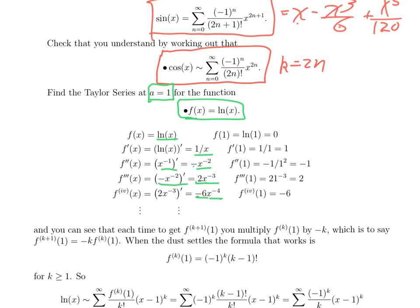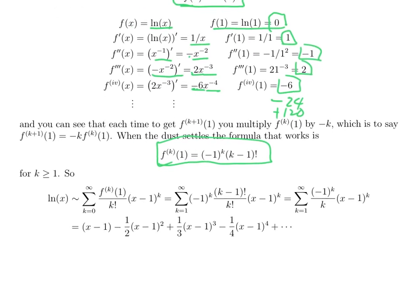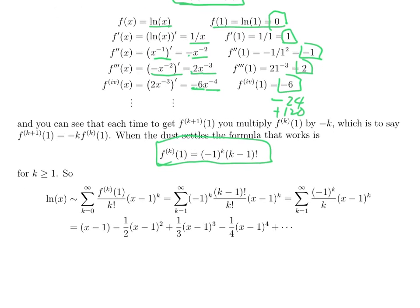Notice the coefficients here change sign and they all look like factorials except the first one. If you plug in 1 into ln of 1 you get 0 but all the rest when you plug in x equals 1 you get 1 minus 1, 2 minus 6, the next will be minus 24, the next one will be plus 120. It's always factorials and signs. And if you check, you will find that the k-th derivative of ln of x evaluated at 1 is minus 1 to the k times k minus 1 factorial.